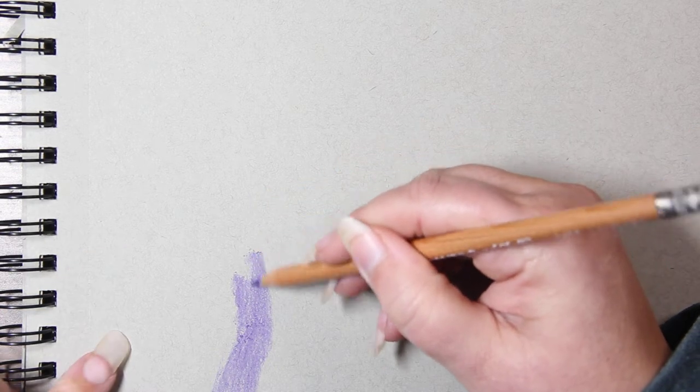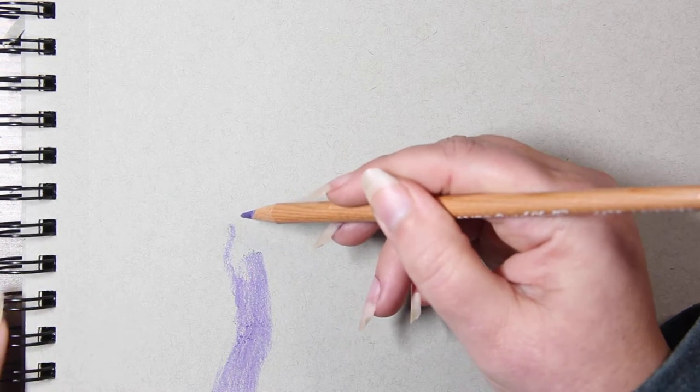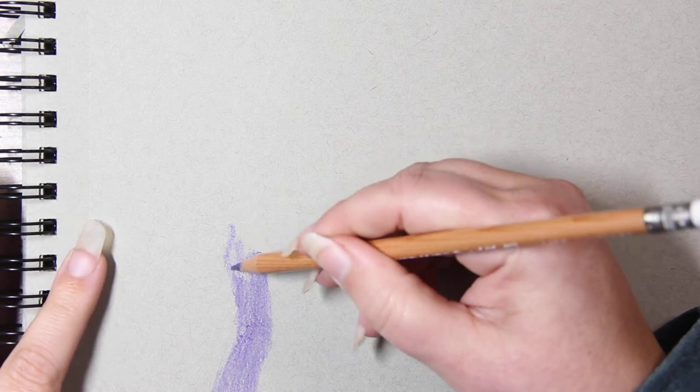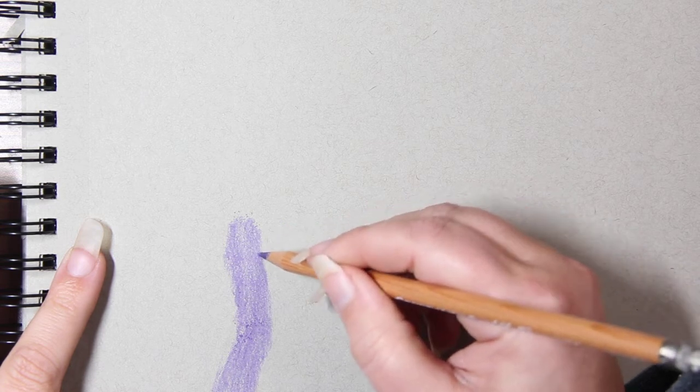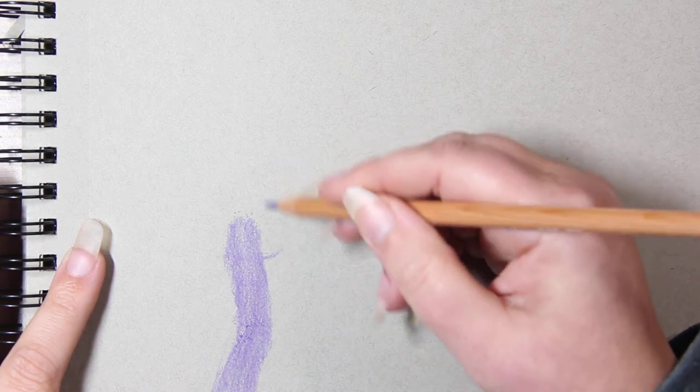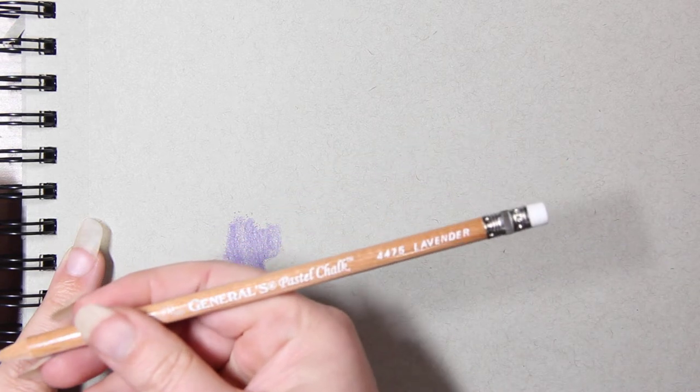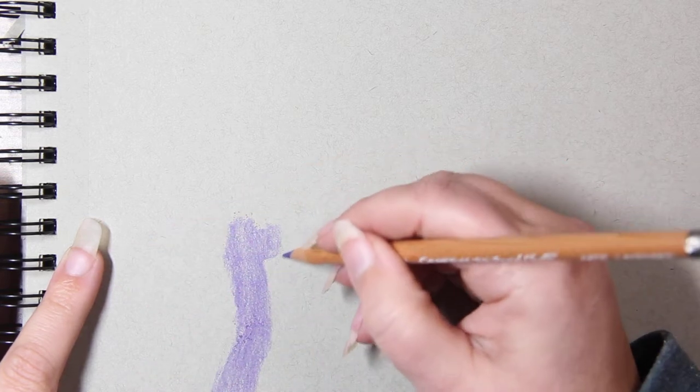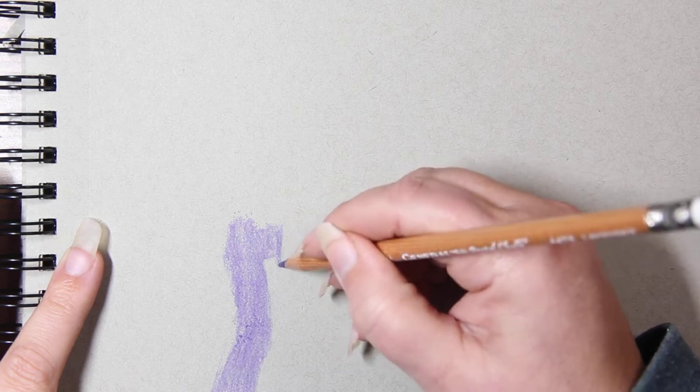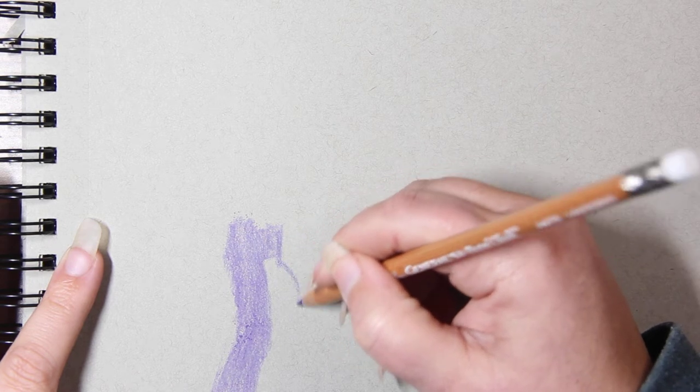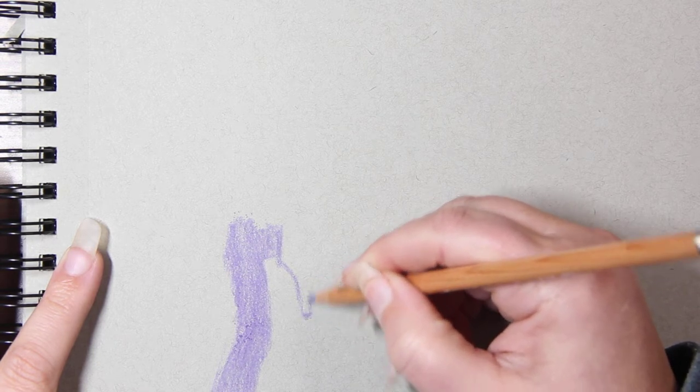And I am using my oldest paper. So this is the Strathmore 400 series toned gray and it's spiral. And I don't like spiral so much. The paper wiggles on me a lot, but I've had it since 2017 and I want to use it up. So that's what I'm doing. And I am using the color lavender and this is 4475 in case you were curious.